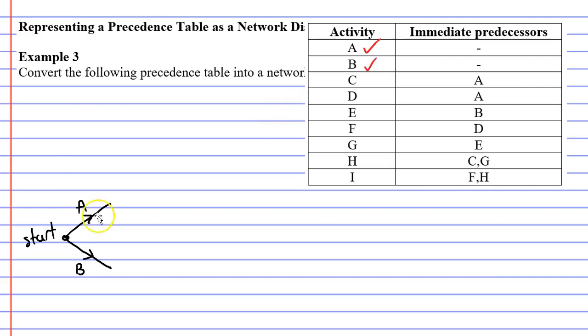Remembering that we don't complete the edge until later, so we don't draw a vertex until later. Now looking at activities C and D, we can see that they both have the same immediate predecessor, the immediate predecessor of A.